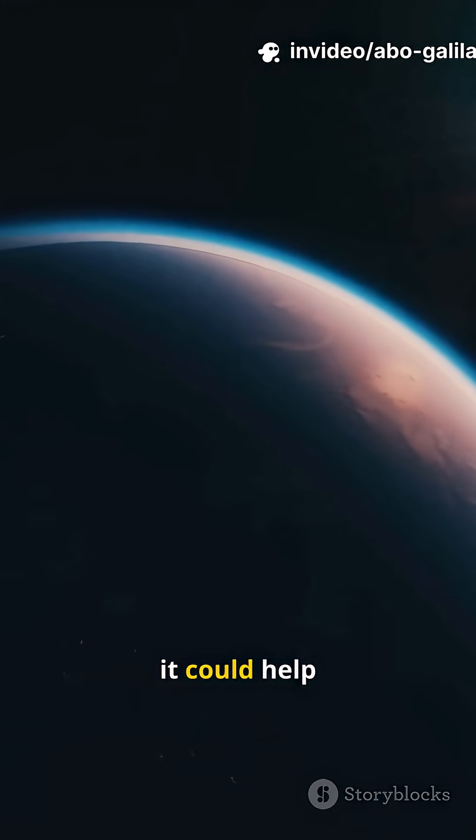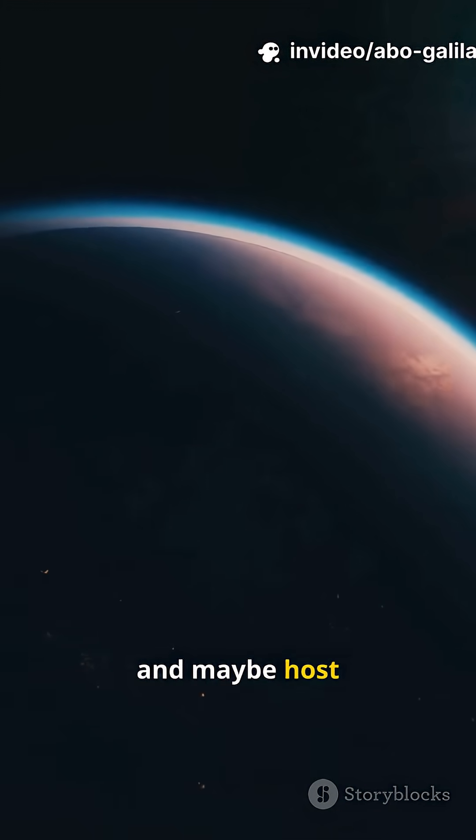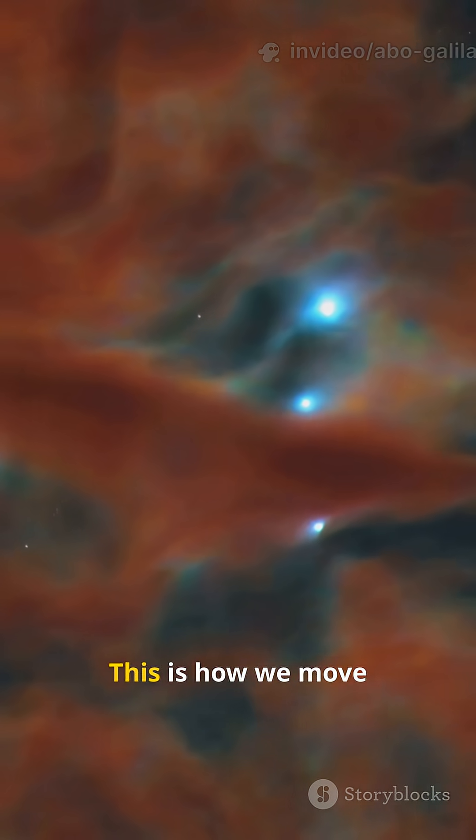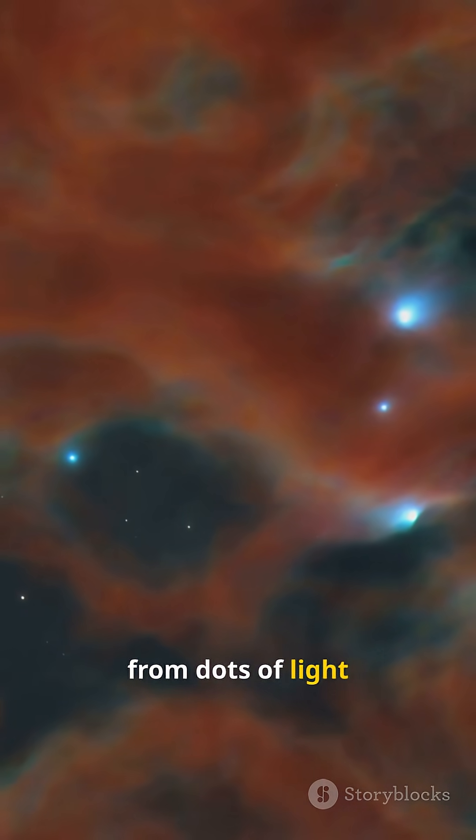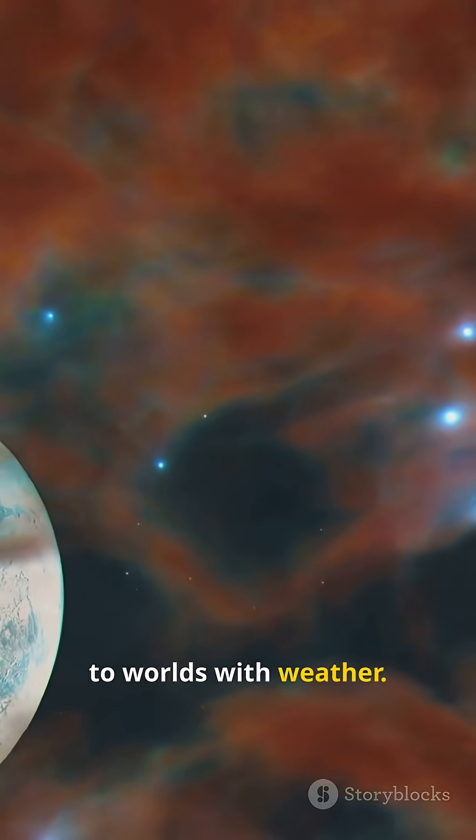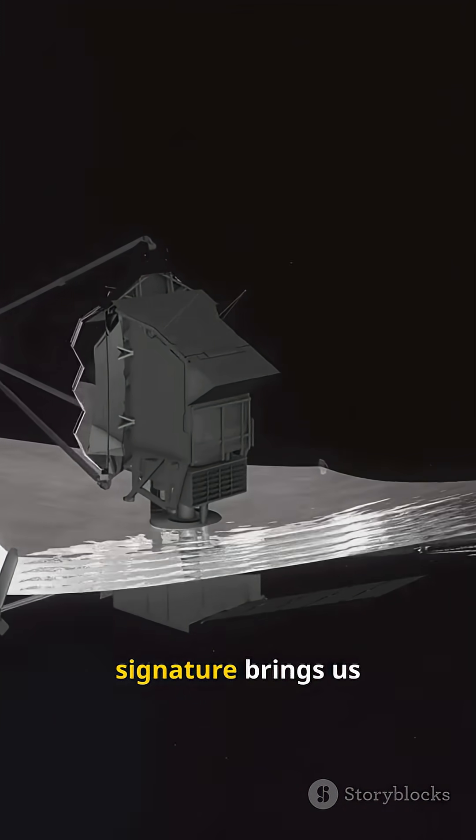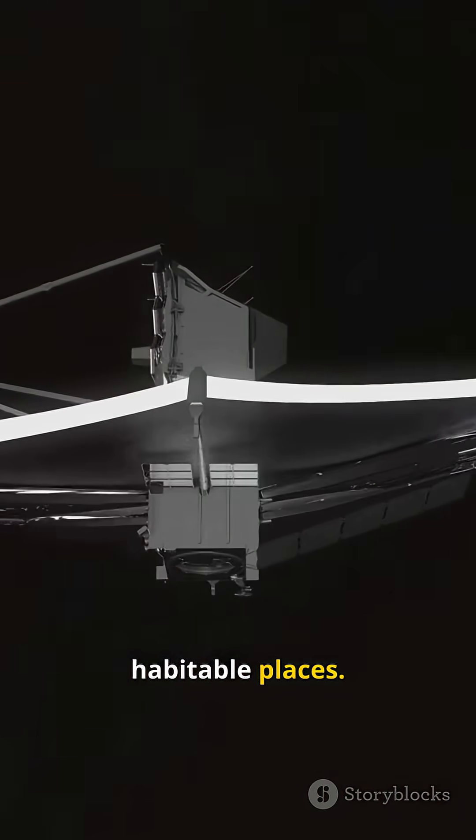If there's air, it could help regulate temperature and maybe host chemistry we know. This is how we move from dots of light to worlds with weather. Every faint signature brings us closer to finding habitable places.